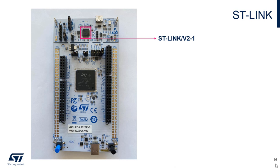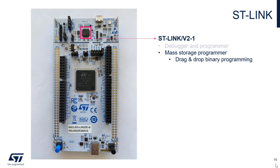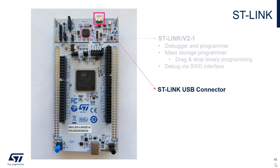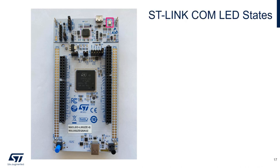The STM32 L5 Nucleo board comes with an onboard ST-Link V2-1, which can function as a debugger or programmer. The ST-Link is a mass storage programmer, allowing for drag-and-drop binary programming and supports debugging via the SWD interface. To access the ST-Link, simply plug in your USB to the ST-Link USB connector, denoted onboard as CN1. Upon connecting the Nucleo board to your PC, you can check the status of the ST-Link connection using the ST-Link COM LED on the upper right-hand corner of the Nucleo.